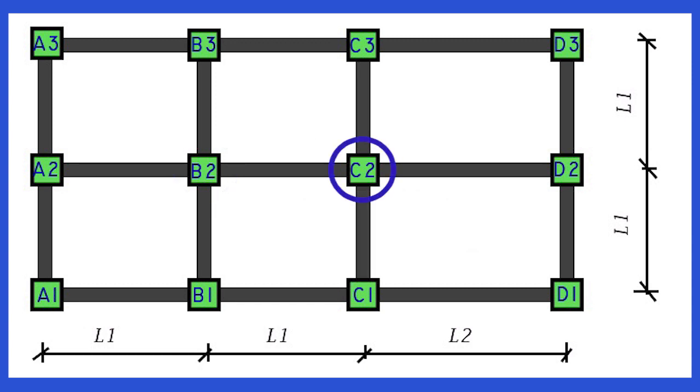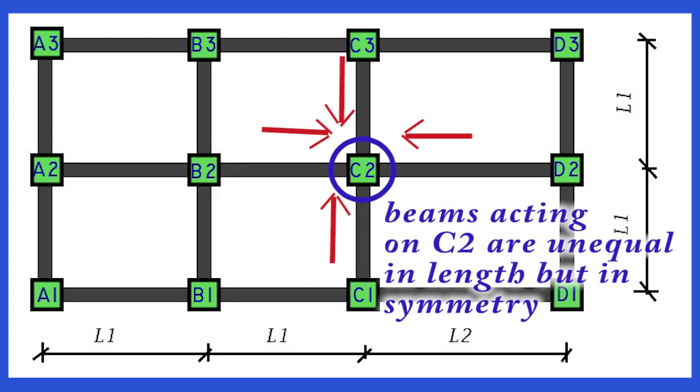Column C2 supports a symmetrical arrangement of beams but which are unequal in length. Column C2 will therefore resist an axial load and moment.